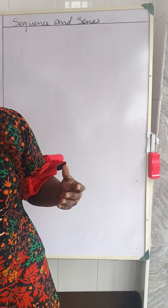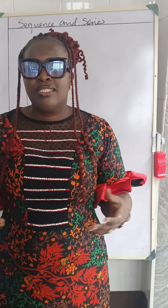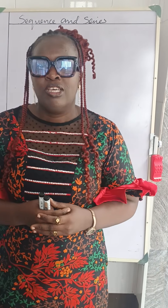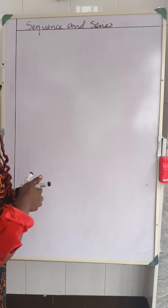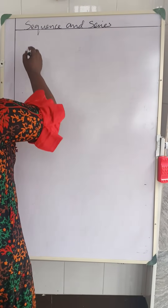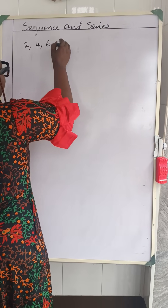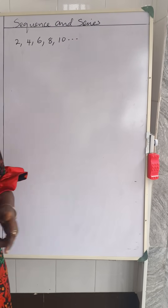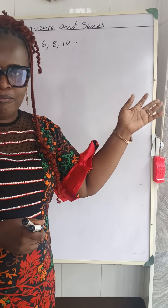Now, what is sequence? In mathematics, sequence means a series or a list of things, especially numbers, which are called the terms of a sequence. Let's look at this example here. This is an example of a sequence. Looking at it, you're going to see that there is a pattern.